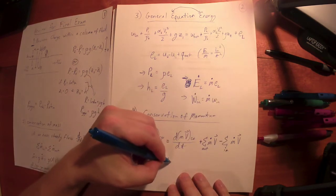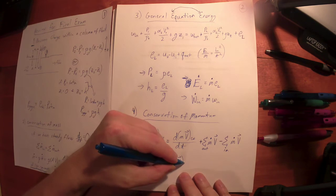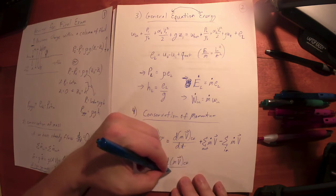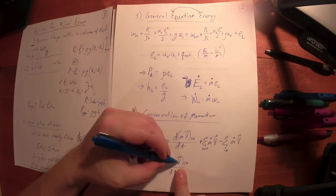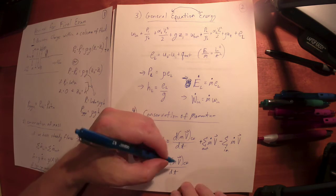Now we don't keep track of the momentum change for every particle as it moves through. What we instead do is we employ Newton's second law. Newton's second law says that the sum of all forces acting on the system is going to equal the change in momentum for the system. And we're already saying through Reynolds transport theorem, the change momentum for the system is equal to this stuff.